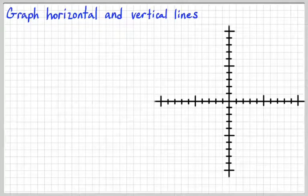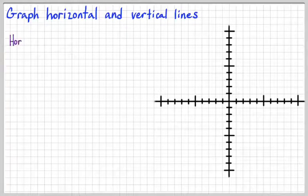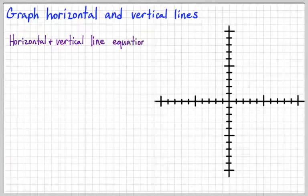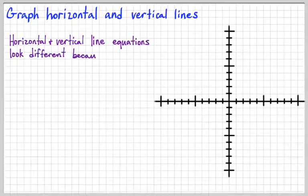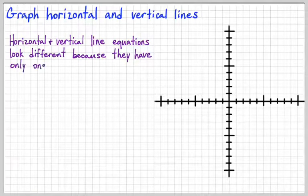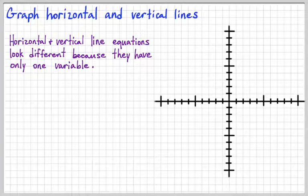In this lesson, we're going to look at how to graph horizontal lines and vertical lines. Horizontal and vertical line equations look different from the regular slope-intercept form that we're used to because they only have one variable each.